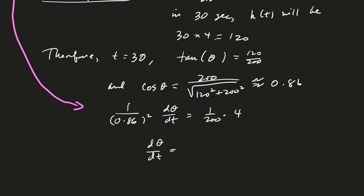Well, let me not simplify it yet so you can see where the numbers are coming from. So it's going to be 4 times 0.86 squared divided by 200. And that's going to be approximately 0.015 if you compute it on your calculator.